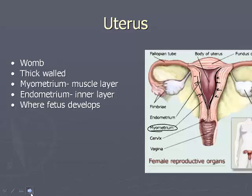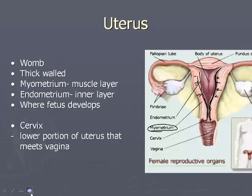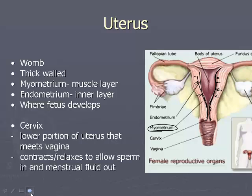The fetus develops in the uterus, and on the lower part of the uterus is what we call the cervix — you can see it's the narrowing part. The function of the cervix is essentially controlling what enters and exits. When it relaxes, it allows sperm in and menstrual fluid out — or, painfully, a baby out.